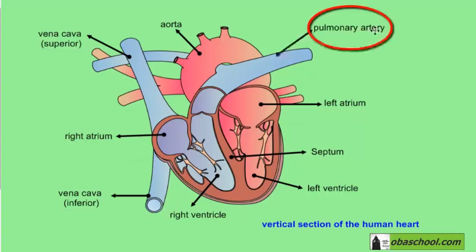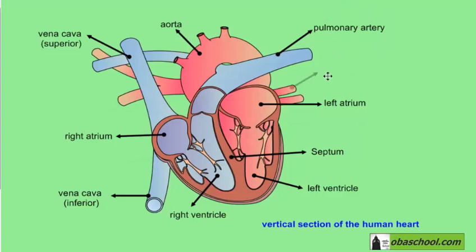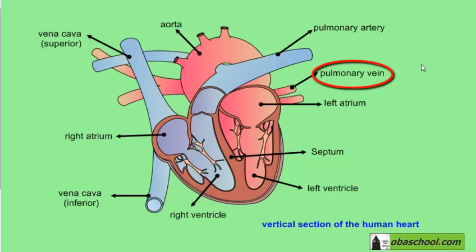We also saw the pulmonary artery that takes deoxygenated blood from the heart to the lungs in order to get oxygenated. And we have the pulmonary vein that takes oxygenated blood from the lungs back to the heart.